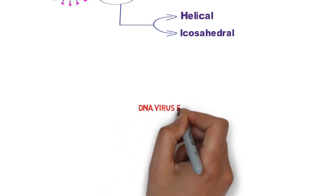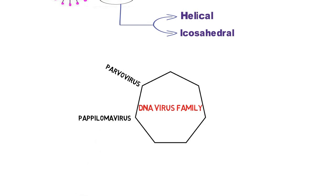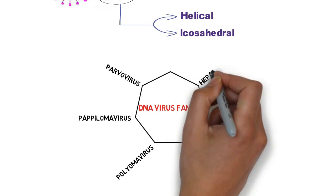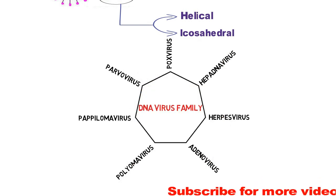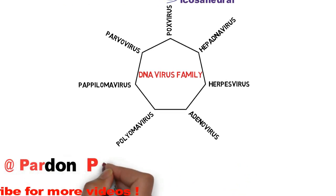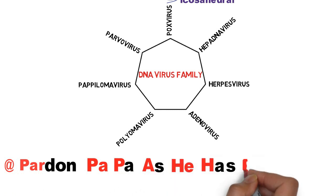Now let's move to the DNA virus family. The DNA virus family comprises parvovirus, papilloma virus, polyoma virus, adenovirus, herpes virus, hepadna virus, and pox virus. To remember these viruses we can use the mnemonic: 'Pardon Papa As He Has Pox DNA.'